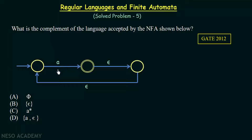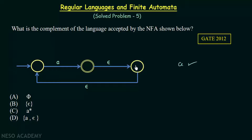Looking carefully, we only have one symbol in this NFA: A. The other symbols are blank or empty symbols, which is epsilon. A is the only real symbol present. If we start from the starting state and receive the symbol A, it goes to the final state and gets accepted.